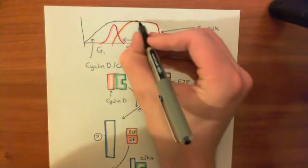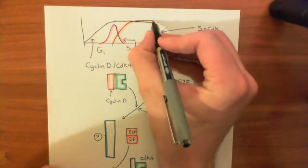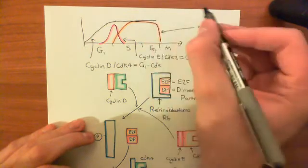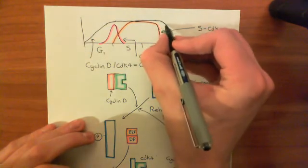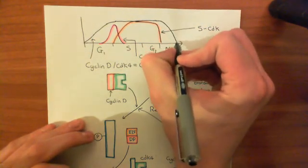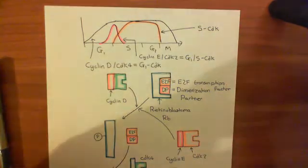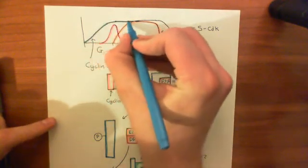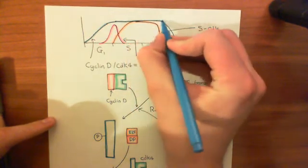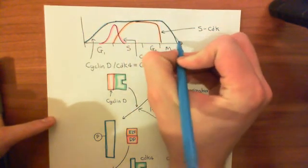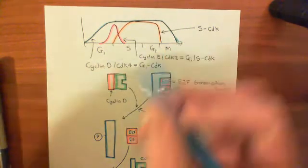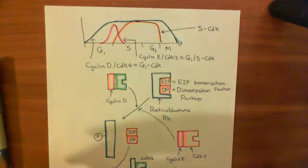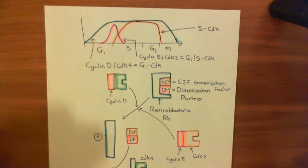And if we complete the graph for the G1-CDK or the cyclin-D-CDK4 complex, it remains high throughout nearly all of the cell cycle afterwards and only comes down towards the end. So this is the level of our cyclin-D-CDK4 complex or our G1-CDK, which was extremely important for phosphorylating retinoblastoma protein and moving us from G1 to S.